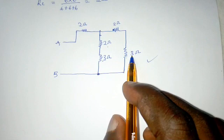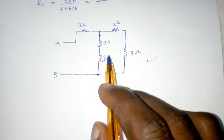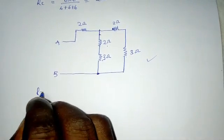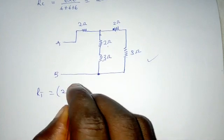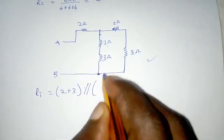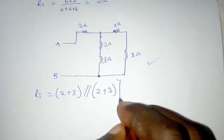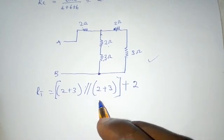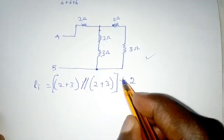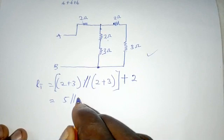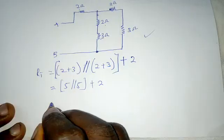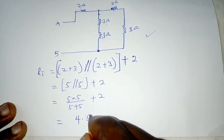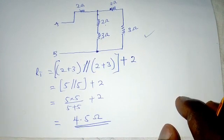In the new circuit, we can see that 2 ohms and 3 ohms are in series, which is in parallel with another series combination of 2 ohms and 3 ohms, and all of that is in series with the remaining 2-ohm resistor. So we get: (2+3) in parallel with (2+3), all in series with 2. That is 5 parallel with 5, plus 2, which is 5 times 5 over 5 plus 5, plus 2, giving a final answer of 4.5 ohms.